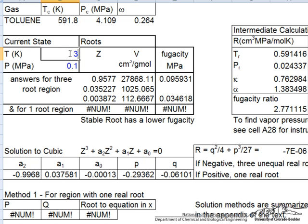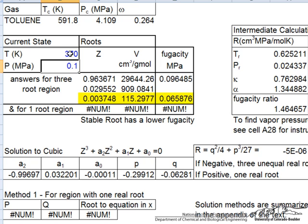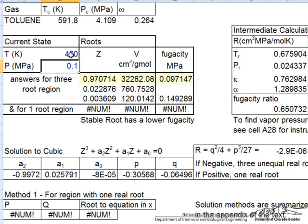Still the lowest fugacity is for the liquid phase, so that's going to be the stable state. If we go to 400 Kelvin, however, now the lowest fugacity is for the vapor phase. 0.097 is lower than 0.149, so we're going to be in the vapor phase.